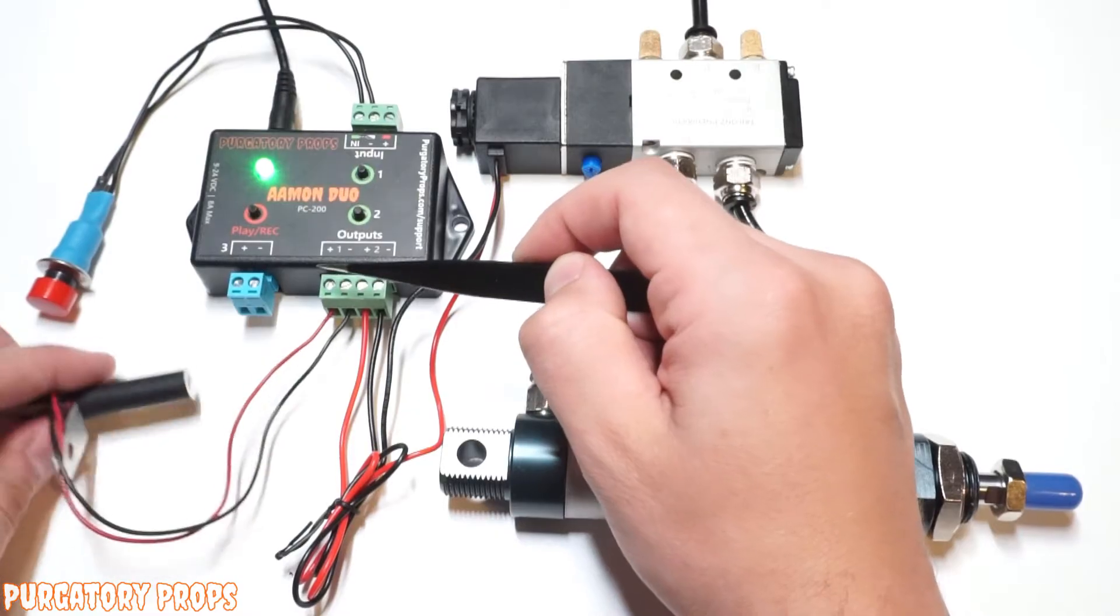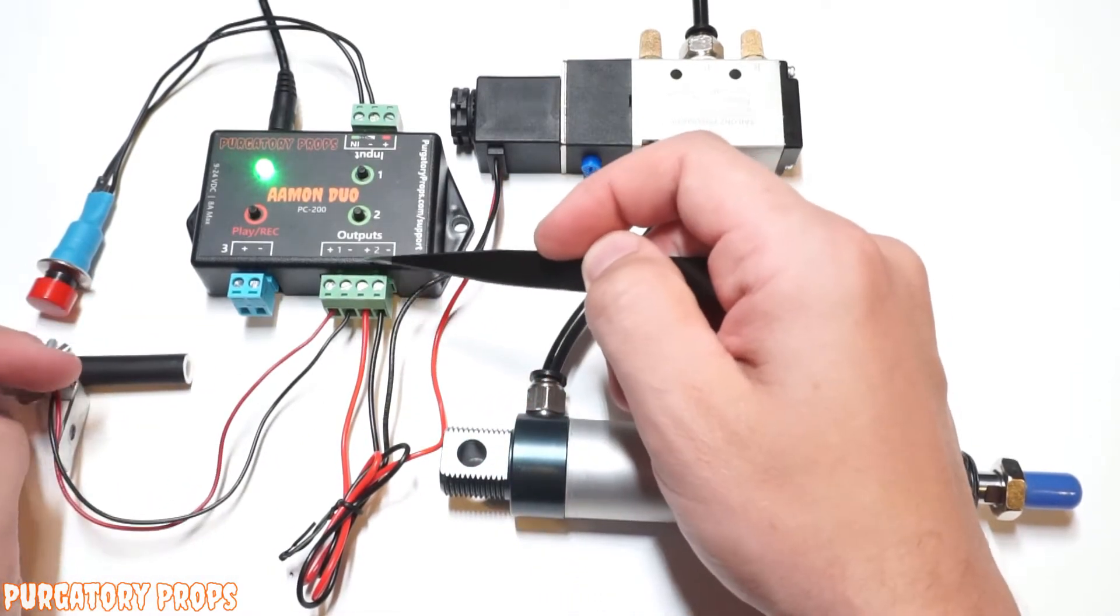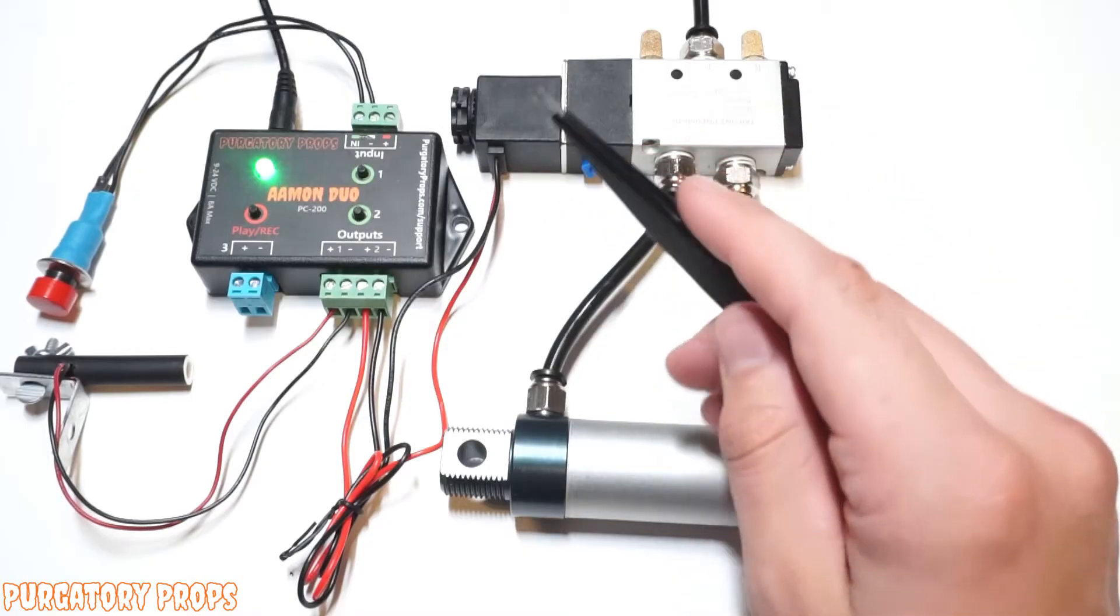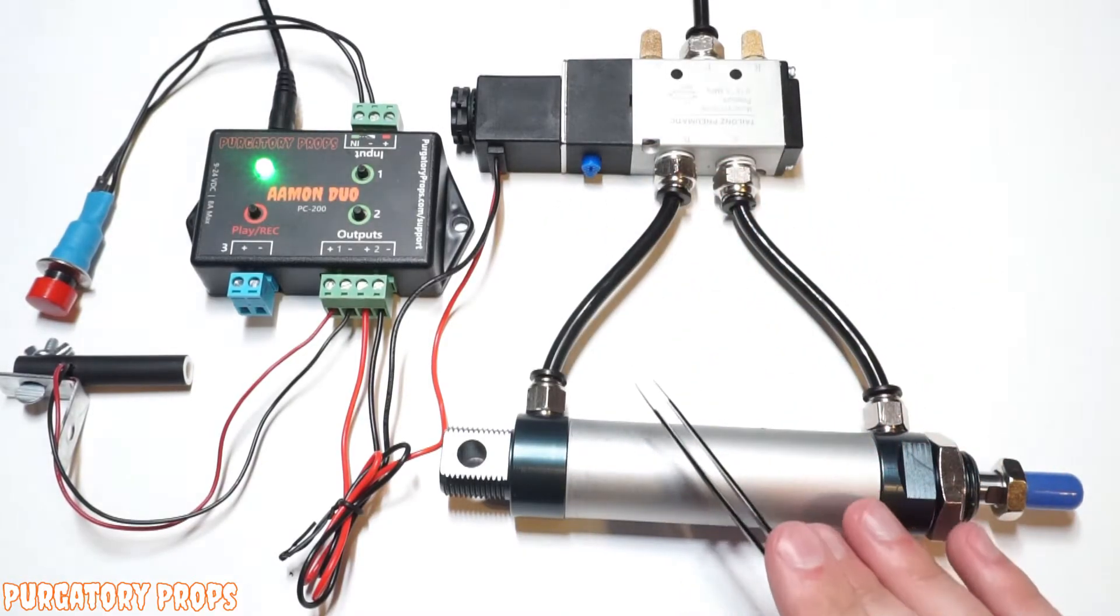On the outputs, for output one, we just have a simple 12 volt LED. And then output two, we have a solenoid connected to an air cylinder.